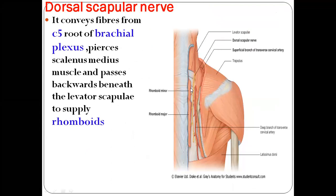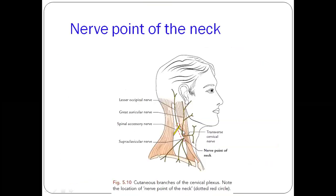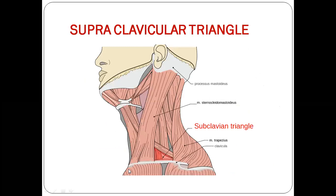The dorsal scapular nerve conveys fibers from the C5 root of the brachial plexus, pierces scalenus medius, passes backwards beneath levator scapulae, and supplies the rhomboids. The upper trunk of the brachial plexus is formed by C5 and C6 roots and enters the occipital triangle between scalenus medius and the inferior belly of omohyoid — this point is vulnerable to injury and is called Erb's point. The nerve point of the neck, at the junction of the upper and middle thirds of the posterior border of sternocleidomastoid, is where lesser occipital, great auricular, transverse cervical, supraclavicular, and spinal accessory nerves emerge — making it the site for cervical plexus nerve block.